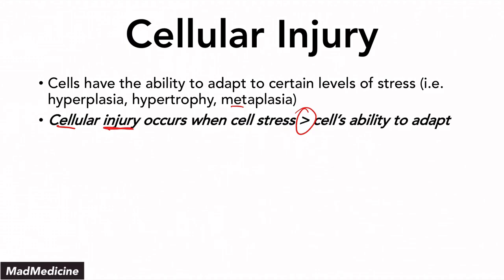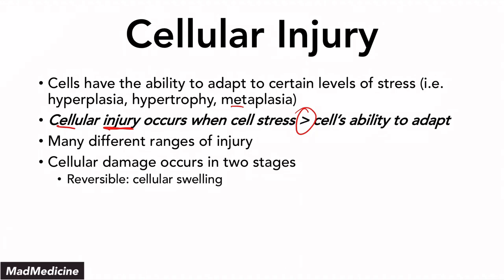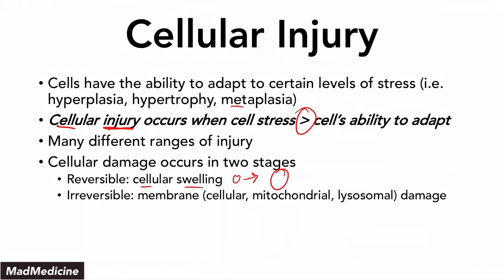At the end of the day, you have many different ranges of injury, and cellular damage processes occur in two main stages. The first is the reversible stage — the hallmark of which is cellular swelling where a cell just grows. And then you have the irreversible stage, where you're going to see membrane damage not just of the cell, but of the mitochondria and lysosome as well.